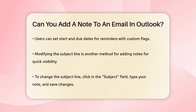Another way is to modify the subject line. This is useful if you need to see the note right away. Open the email, click in the Subject field, and type your note. Close the email and select Yes to save the changes. Now your note will be visible in your list of messages.